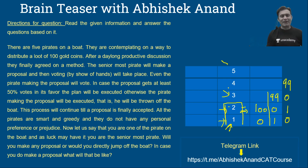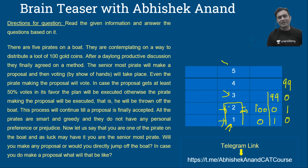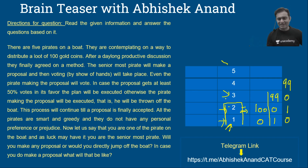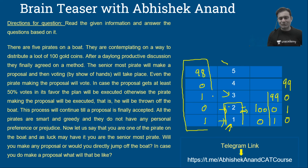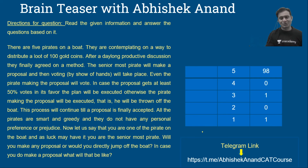Now you, the senior-most pirate, know that if you're off the board, pirate four's proposal will be accepted. You need two votes beyond your own. You target pirates one and three, who both get zero under pirate four's proposal. So your proposal is: 98 coins to yourself, 1 coin to pirate three, 1 coin to pirate one, and 0 to pirates two and four. This proposal will be made and accepted.